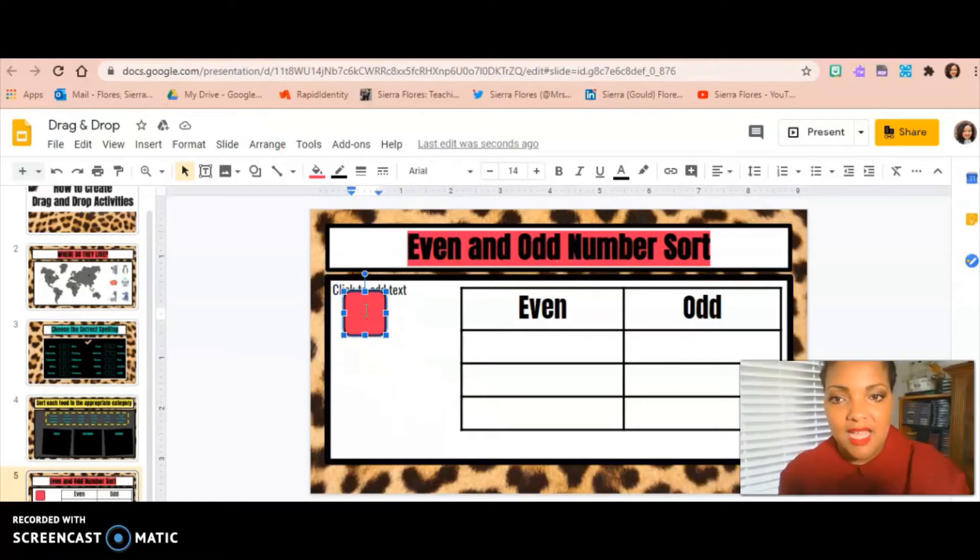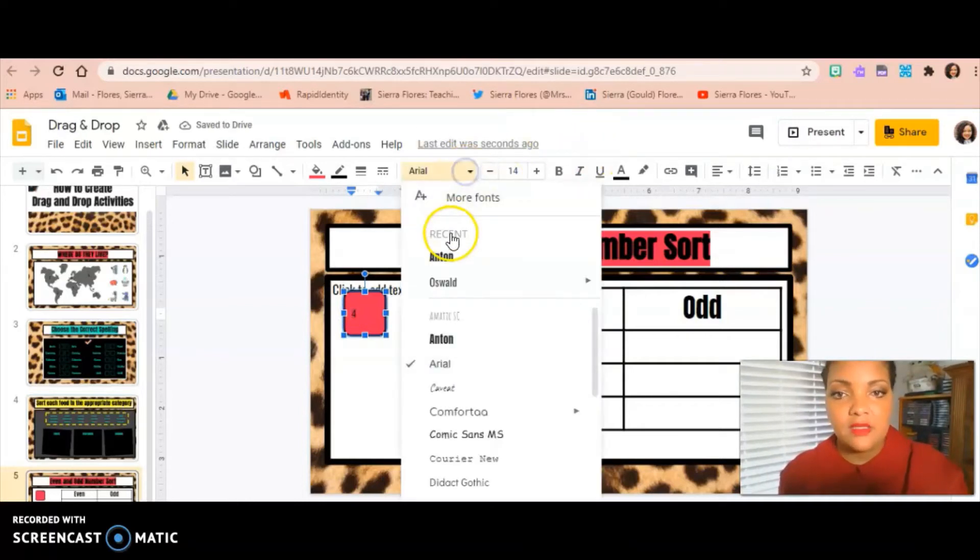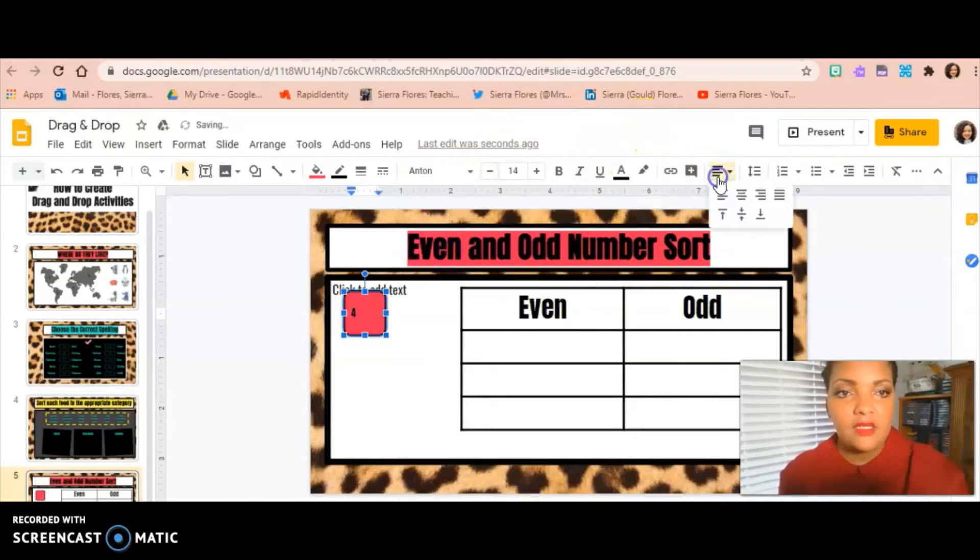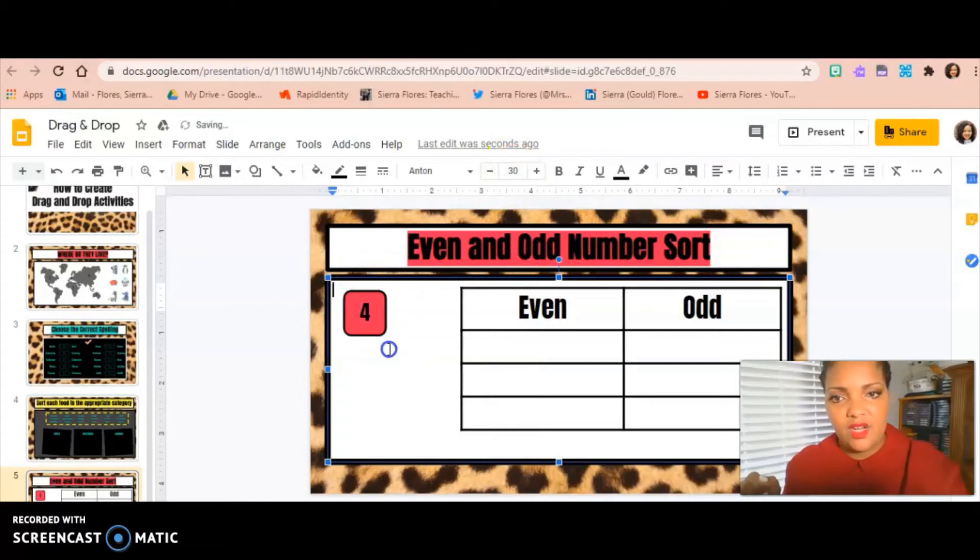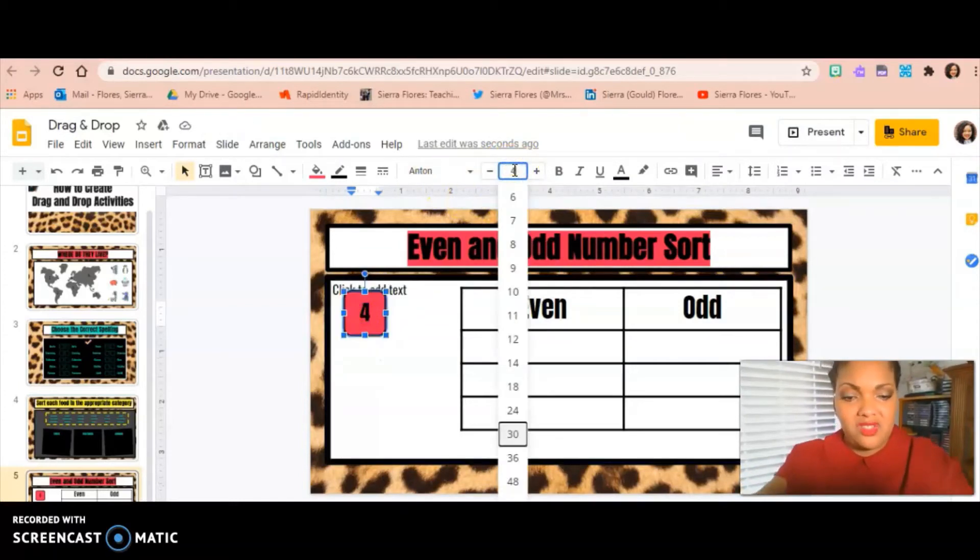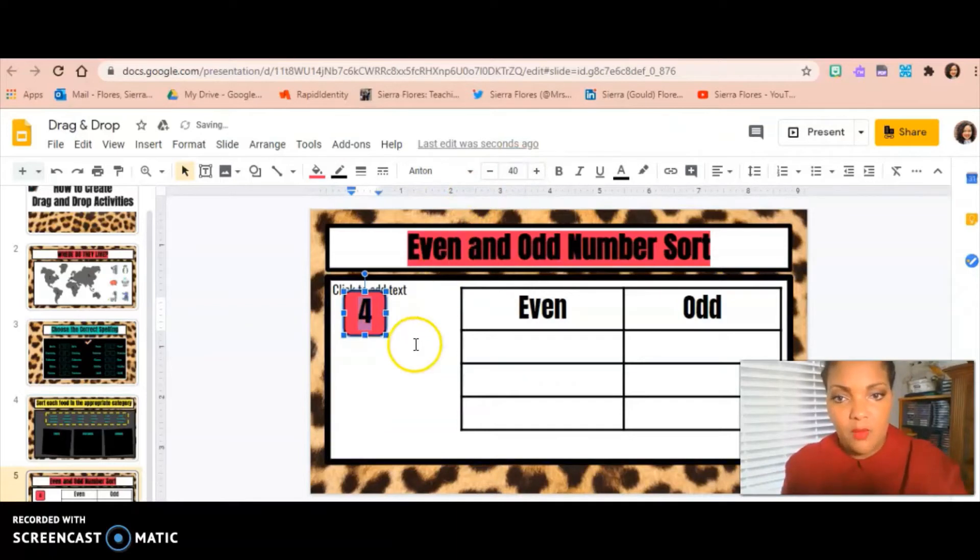And you can double click inside this and then you can write whatever number it is or word that you want to write. So I'm going to put the number four. And of course, you know how I am with my fonts, so I'm going to change that font. I'm going to center it and I'm going to put it on. Let's see if I can fit 30 in there. Oh yeah, I can definitely fit 30. I could probably fit more than that. So let's just see what 40 looks like. Boom. There we go. 40.